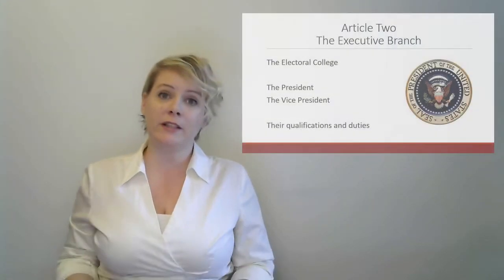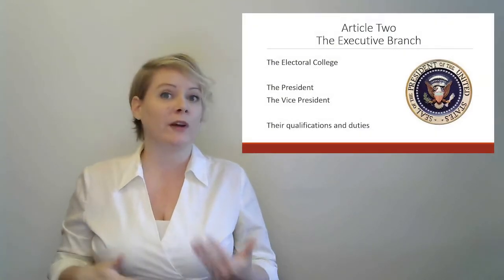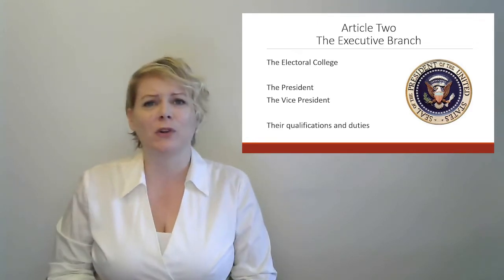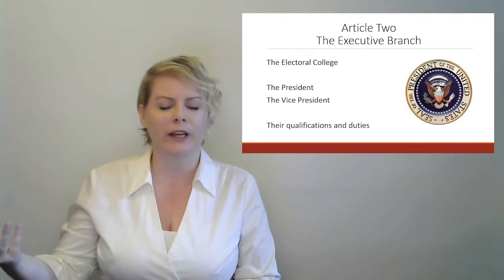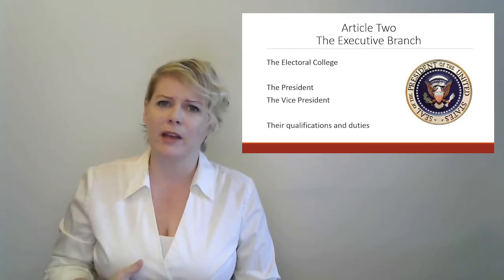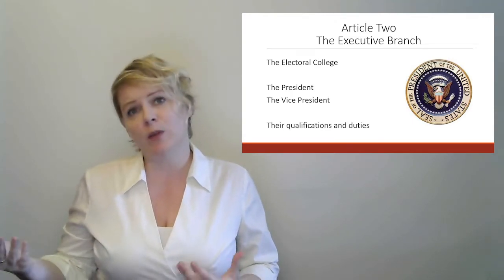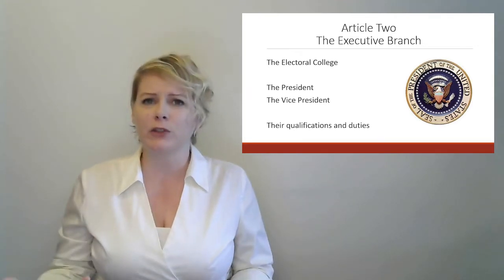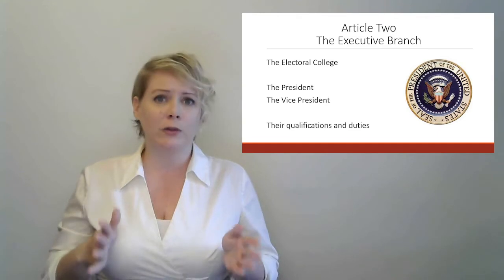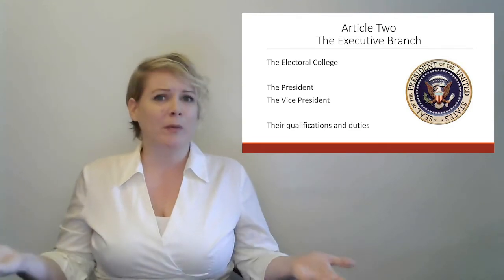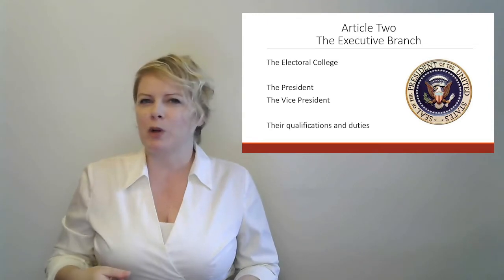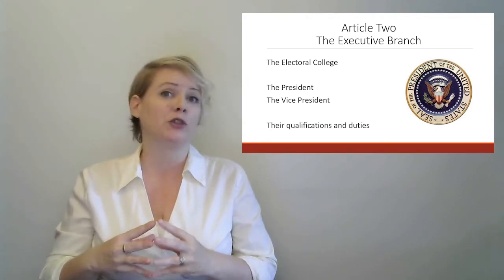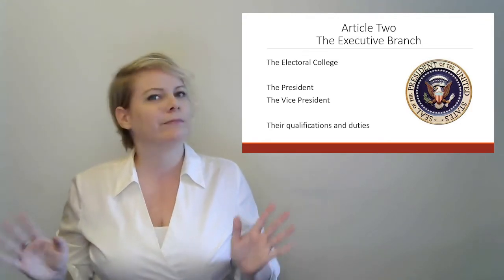Article Two is about the executive branch — it specifies the president, vice president, and the electoral college. We forget about the electoral college every four years and then it comes back and it's a mess. When they established it, the people making up the electoral college were basically whoever they wanted — they thought the most educated men would show up and pick the best president. Gradually we changed our minds and created a general population vote, but initially the president was chosen by a select group of men believed to make good decisions.